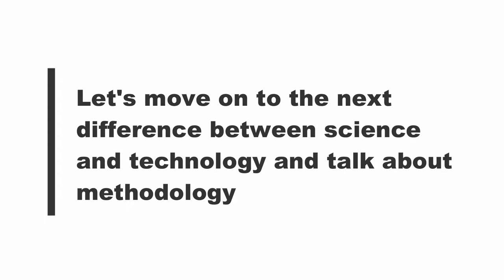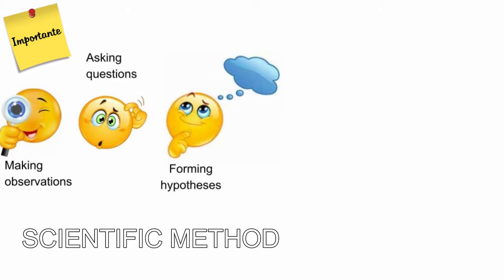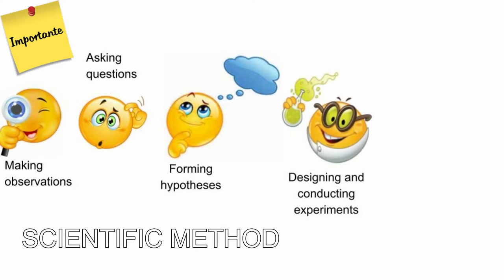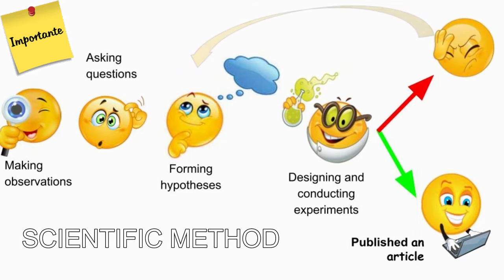Let's move on to the next difference between science and technology and talk about methodology. In science, the scientific method is used. The scientific method is a process based on making observations, asking questions, forming hypotheses about what and why something occurs, and finally designing and conducting experiments in order to assess the predictions. When this process leads to the discovery of novel information, it can be published for others to review and utilize. If the initial hypothesis is invalidated, a new hypothesis and experiment can be created.